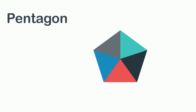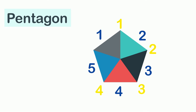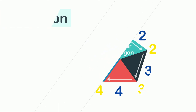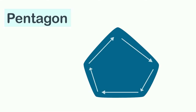This shape is called a pentagon. A pentagon has five sides — one, two, three, four, and five — and five corners. When all of its sides are of equal length, it is called a regular pentagon. But if one or more sides are of different length, it is called an irregular pentagon.